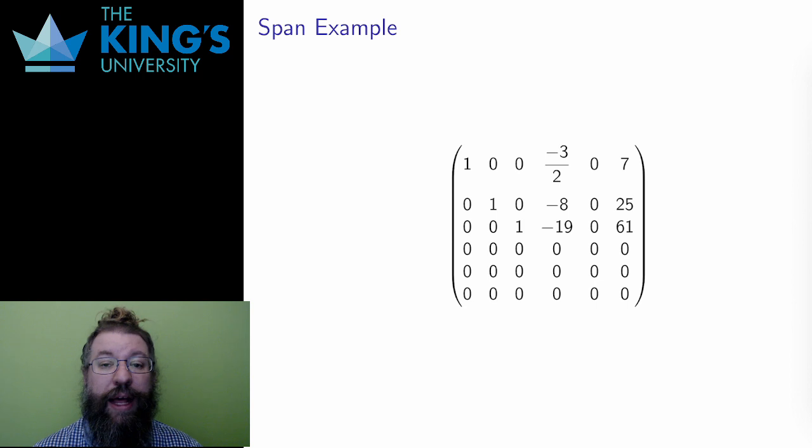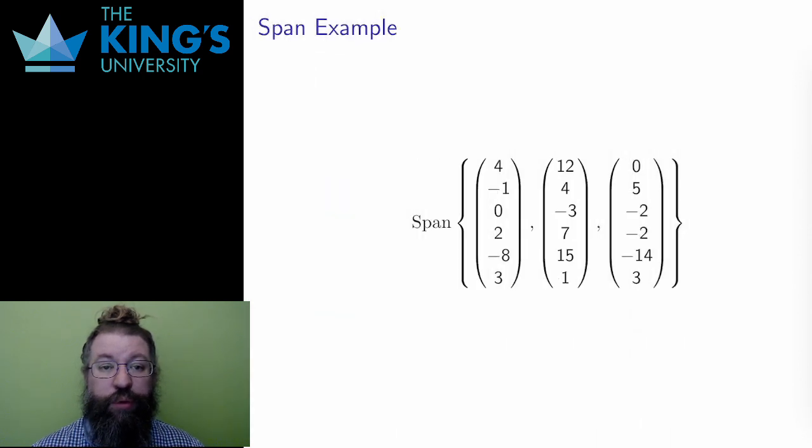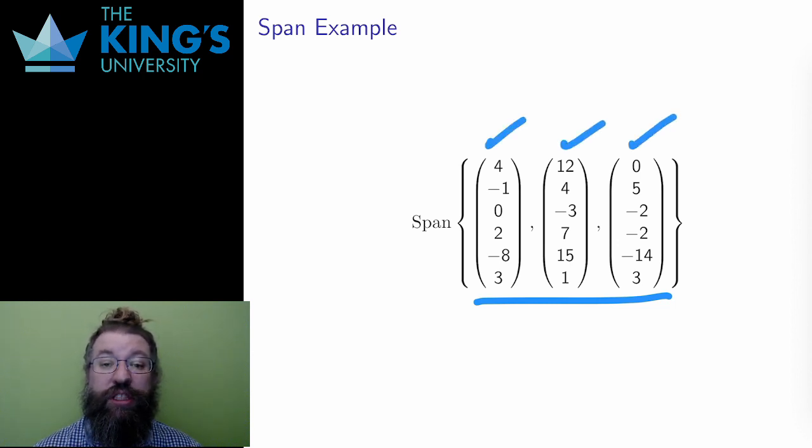Here is the row reduced form. I have three leading ones, so the dimension of the span is three. These were three leading ones and three rows without leading ones. That means that three vectors in the original span were redundant. The first three rows have leading ones, so as long as the computer didn't rearrange rows, the first three vectors form a linearly independent set, and I can write the original span of six vectors as a span of just three. These three are a basis for the span, since they are linearly independent.